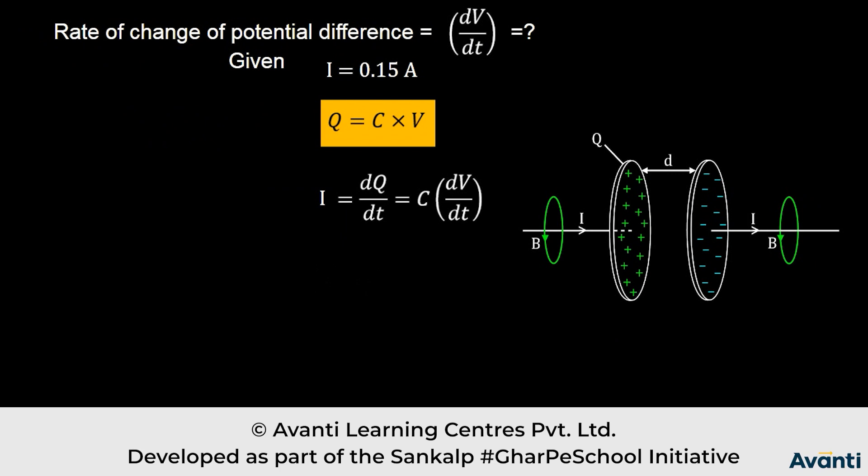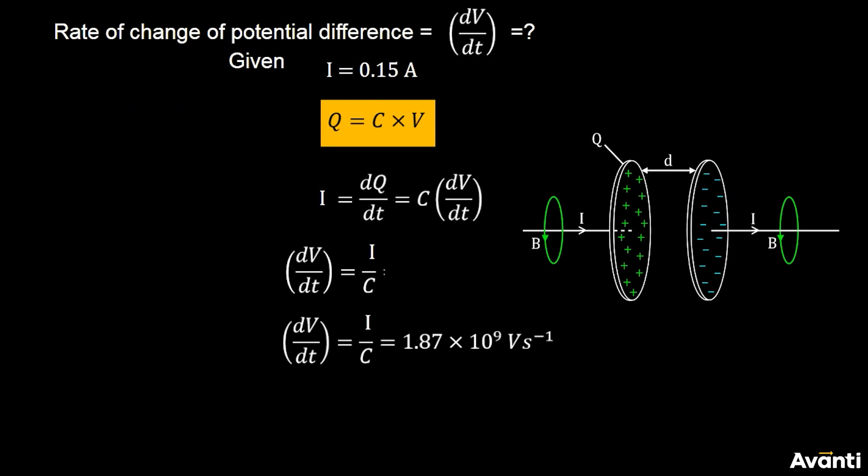dV by dt equals 1.87 into 10 to the power 9 volt per second.